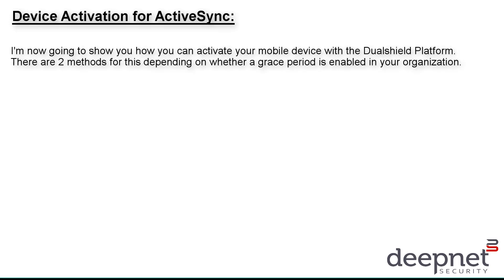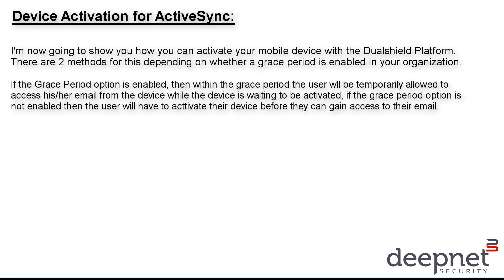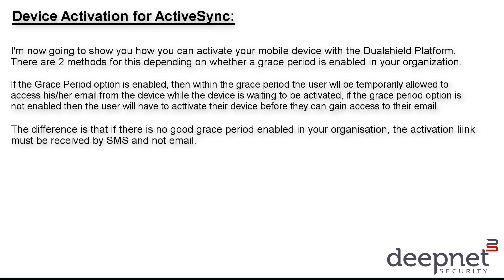I'm now going to show you how you can activate your mobile device with the DualShield platform. There are two methods for this depending on whether a grace period is enabled in your organisation. If the grace period option is enabled, then within the grace period the user will be temporarily allowed to access their email from the device while the device is waiting to be activated. If the grace period option is not enabled, then the user will have to activate their device before they can gain access to their email. The difference is that if there is no grace period, the activation link must be received by an SMS text message and not an email. I will first show you how to activate your device if there is no grace period enabled.